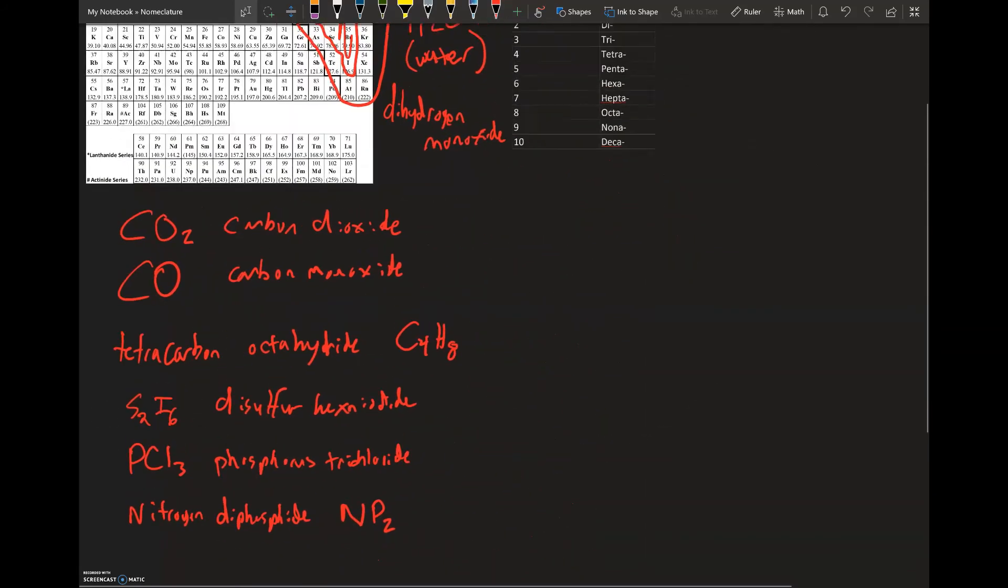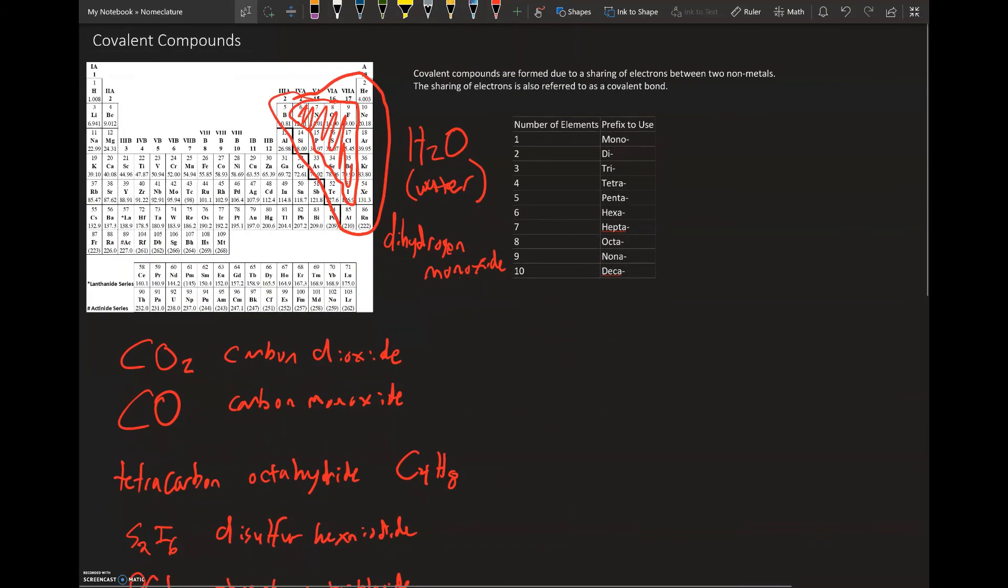Just a little recap from this. Remember covalent compounds occur with two different non-metals. It could be the same. Now there are seven diatomic molecules: hydrogen, nitrogen, oxygen, fluorine, chlorine, bromine, and iodine.